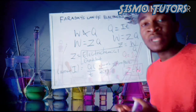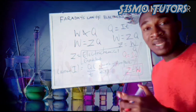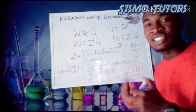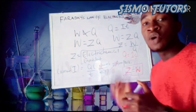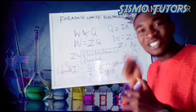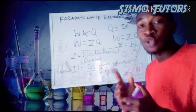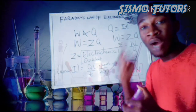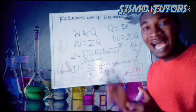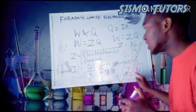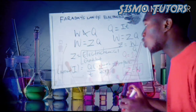In general, the electrochemical equivalent is the weight of the substance deposited when the quantity of charge passed to the solution is one coulomb. And in substitution, we have that Z is equal to W over Q.